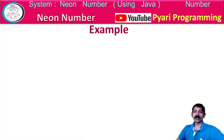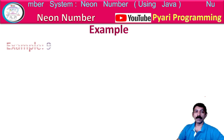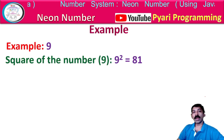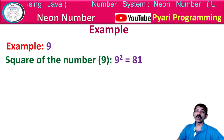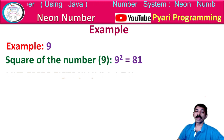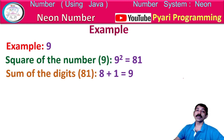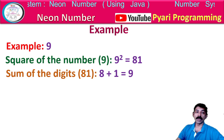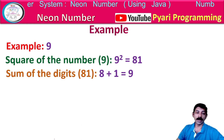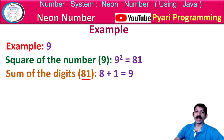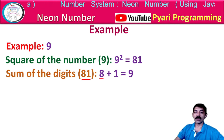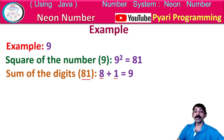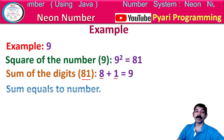Let's see the example. If I have a number called 9, first I calculate the square of the number — 9 squared is 81. Then I find the sum of the digits of 81. The digits are 8 and 1, and 8 plus 1 is 9. Now I need to match this sum with the original number.